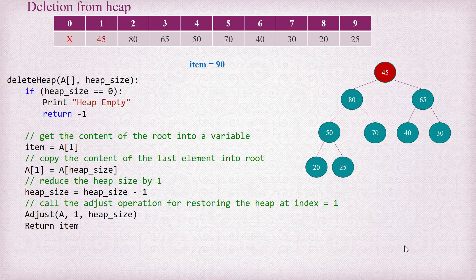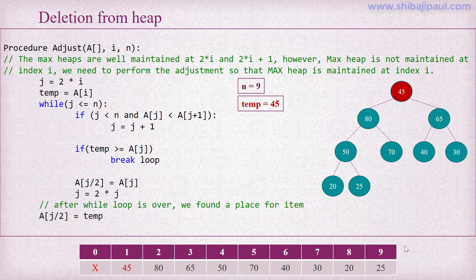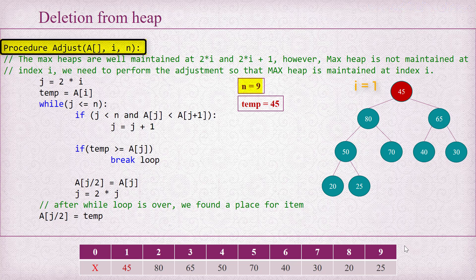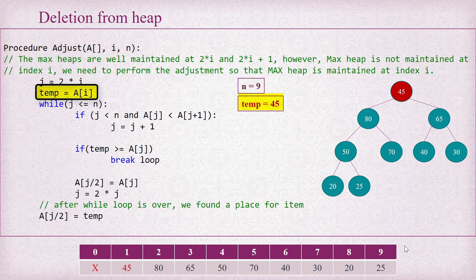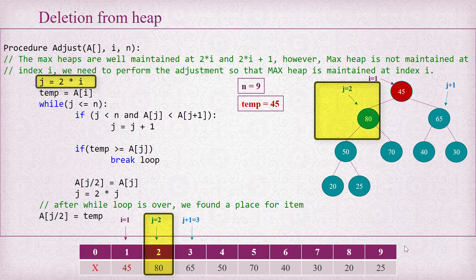Now let's look into the adjust operation. Here is the adjust routine. For this example, i is 1 and n is 9. The adjust operation assigns the content of the index it will adjust into a variable temp. Adjust will adjust at index i equals 1, so it gets the content of index 1 — that is 45 — into variable temp. j is initialized with the index of the left child of i, that is 2.